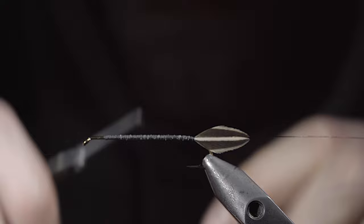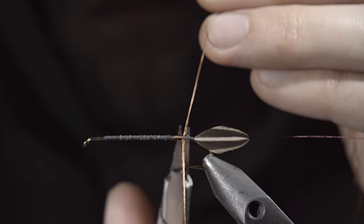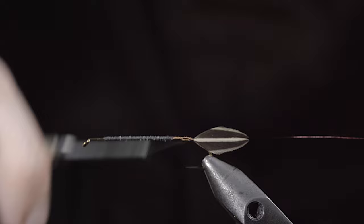Snip your excess free and begin to wrap this in close touching spirals, creating a smooth body towards the head of the fly. This particular thread is fantastic for building up nice clean bodies, however it's very delicate and tends to fray, so take your time in the process.